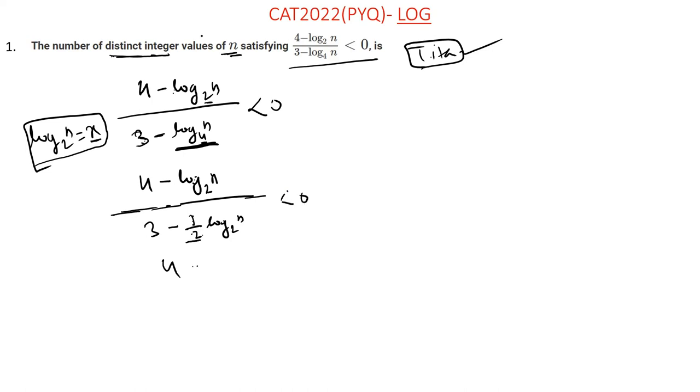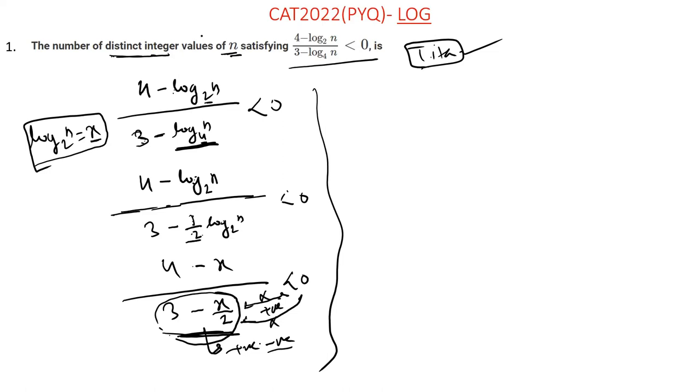4 minus x, 3 minus x by 2, less than 0. Now, inequality rule says that when denominator is positive, then only we can cross multiply. Meaning that this term, when it is positive, then we cross multiply. Otherwise we cannot and here we don't know if it is positive or negative. So we will make this term positive. To make it positive, what can we do is that when 4 minus 1.